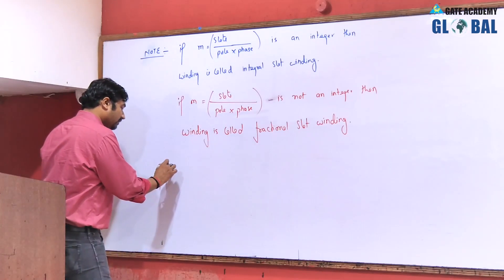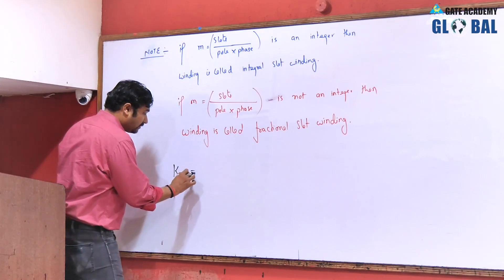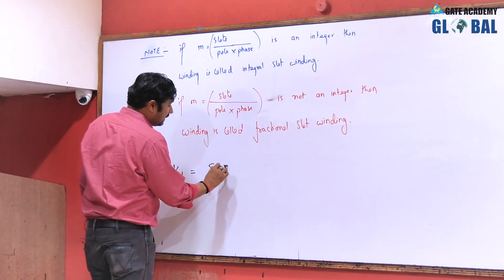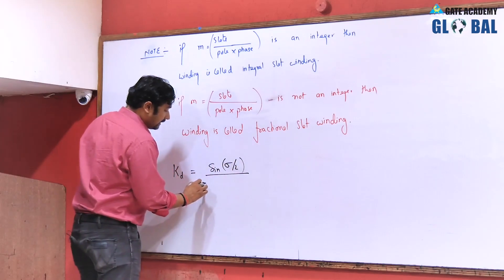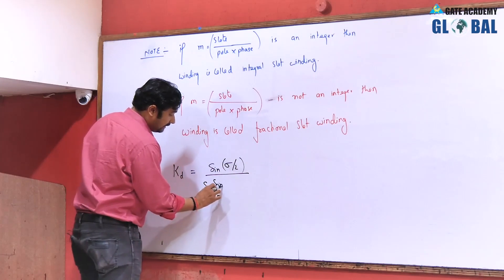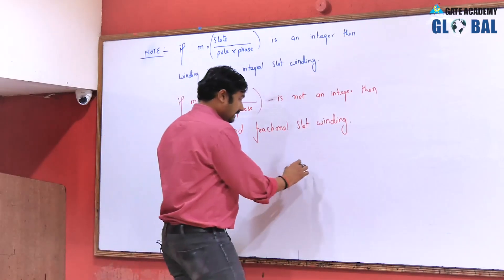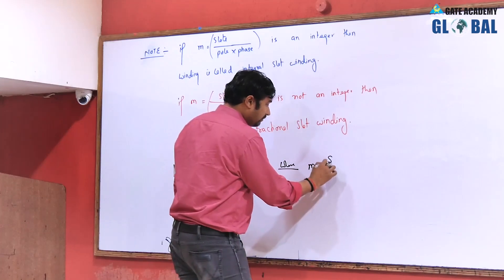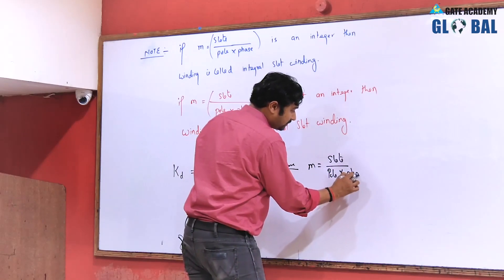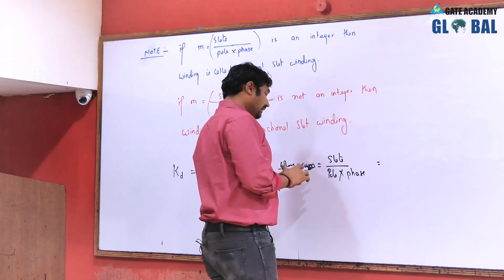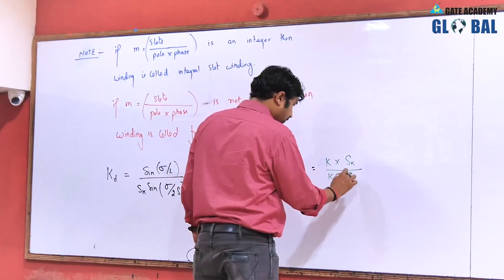For the fractional slot winding, KD for the fundamental component equals sin(m·β/2) divided by S_k·sin(phase spread / 2·S_k), where m is the number of slots per pole per phase. If we take the highest common factor K, the numerator is called S_k and the denominator is called P_k.